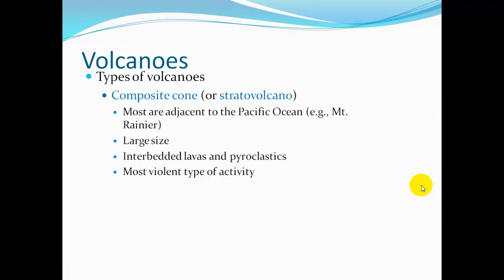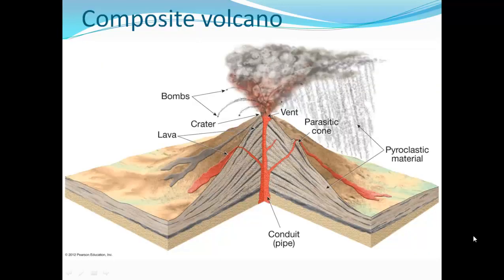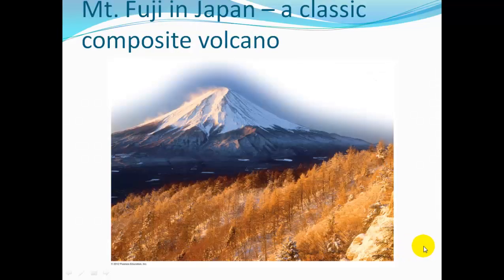Composite cones are stratovolcanoes. Most are adjacent to the Pacific Ocean — examples include Mount Rainier, Mount St. Helens, and Mount Hood. They're very large in size, built of interbedded layers of lavas and pyroclastics. They're the most violent type of volcanic activity, producing rhyolitic lavas. A stratovolcano diagram shows interbedded layers of lava flows and pyroclastic material, a magma chamber, a crater at the summit, and possibly a parasitic cone. Mount Fuji in Japan is a classic, large, majestic composite volcano.